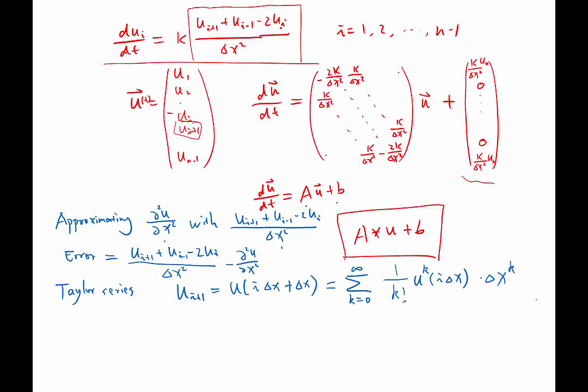So this is the Taylor series of expanding the u at i delta x plus delta x on u at i delta x. The first term, k equal to 0, is the 0-th derivative, which is u itself. And the second term is the first derivative. The third term is the second order derivative, which is what we are trying to approximate. And the third order derivative, et cetera, is something also we don't want.